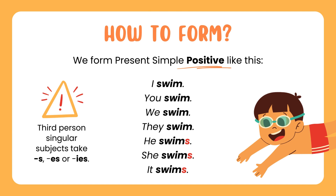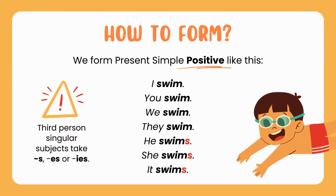How to form? We form Present Simple positive like this: I swim, you swim, we swim, they swim, he swims, she swims, it swims.